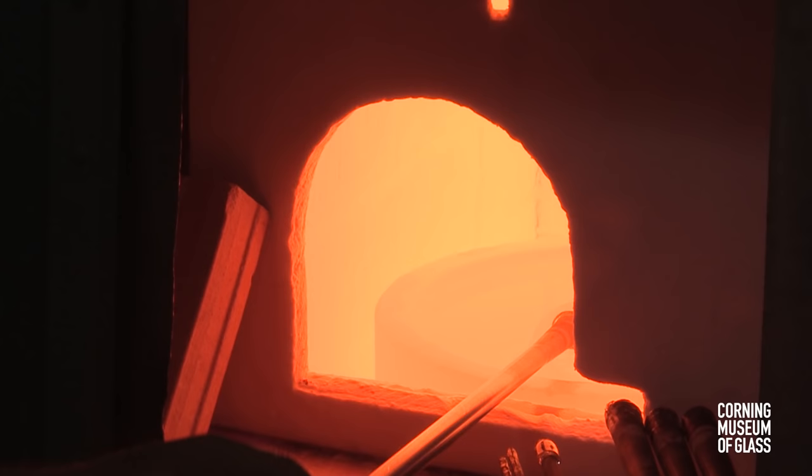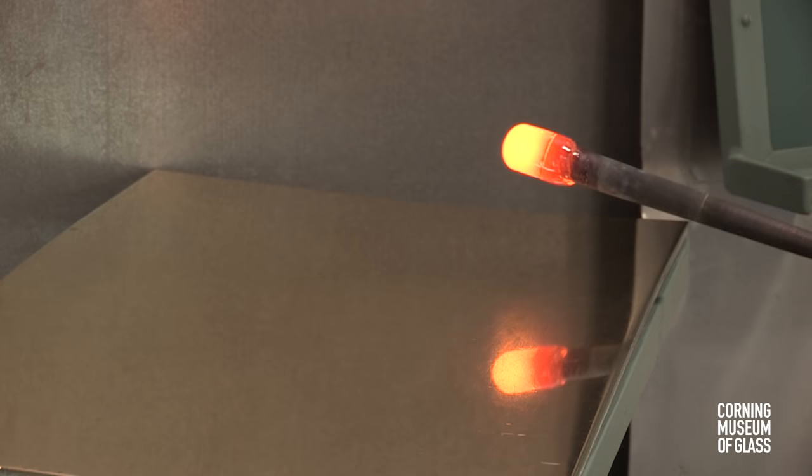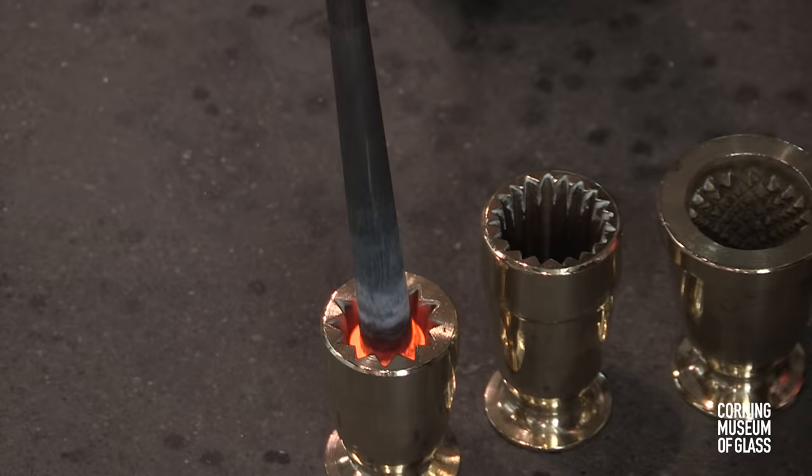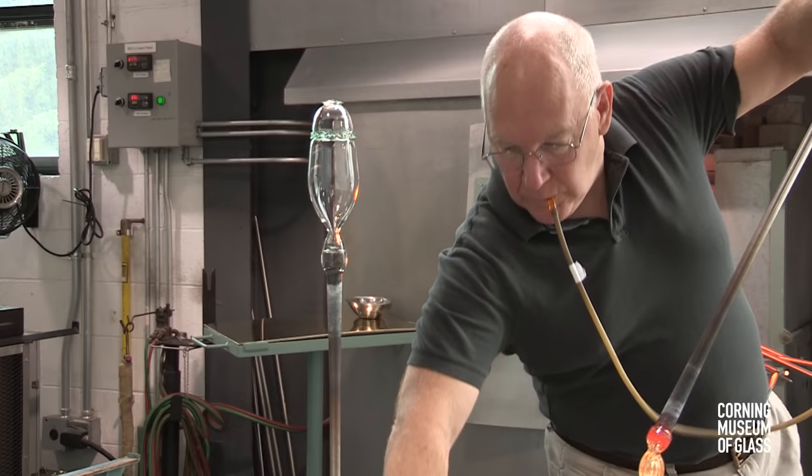Another small amount of glass is gathered on a smaller blowpipe, marvered, inflated, then lowered into a dip or optic mold, where it's given ribs. This will form the knop.